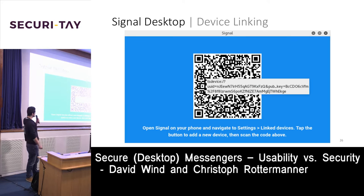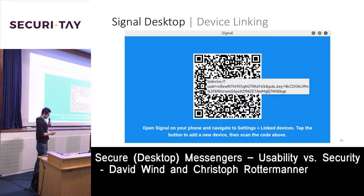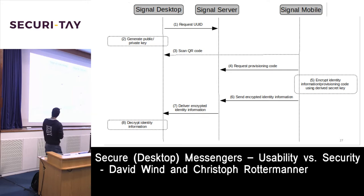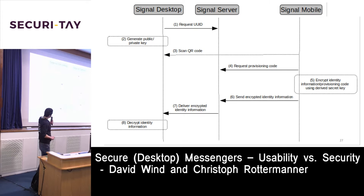Signal Desktop uses QR codes to exchange the public keys needed to calculate secrets, which are then used to encrypt messages. It is open source. When you install Signal Desktop, a QR code is displayed which you scan on your mobile phone to link the device to your existing Signal account, which is registered through your phone number.